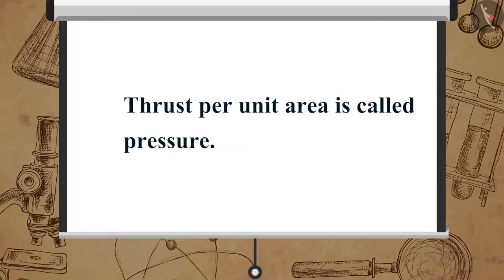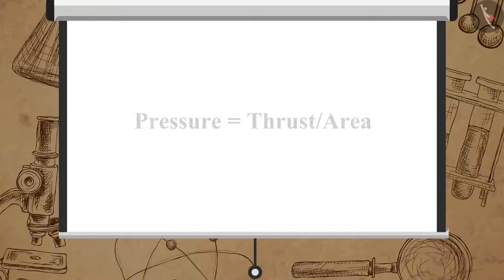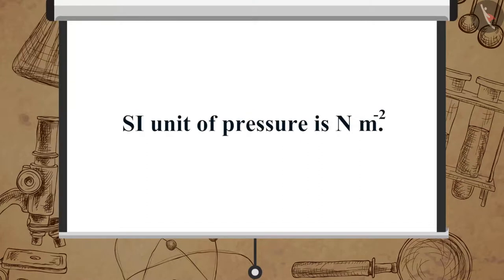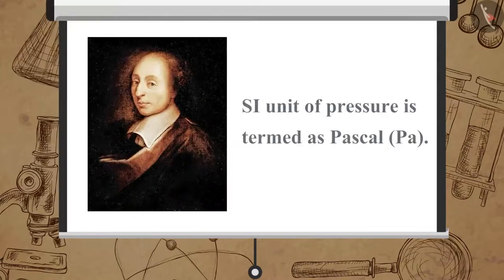Thrust per unit area is called pressure. Pressure is equal to thrust upon area. Substituting the units of thrust and area in the previous equation, the SI unit of pressure is Newton per meter square. To honor the scientist Blaise Pascal, the SI unit of pressure is termed as Pascal. It is denoted as Pa.